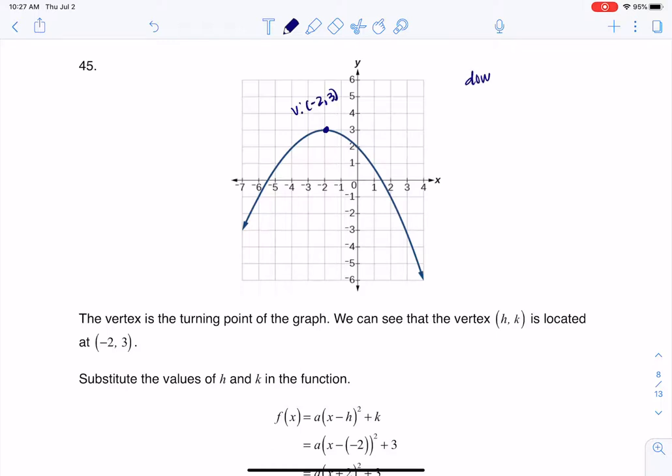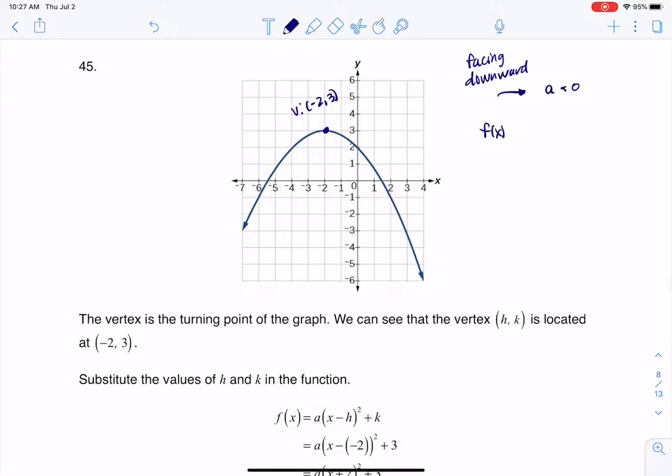I also notice my parabola, like I said, it's facing downward, which means when I get going, I know whatever that a value is, it's going to be negative. It's going to be less than zero. When I say the a value, eventually I'm going to get to something that's ax² + bx + c, and all I'm saying here is that this number has got to be negative.